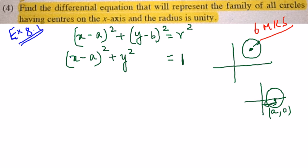When we differentiate this, I get 2 into x minus a plus 2y dy by dx equal to differentiating 1, you get 0. So I can also remove 2 here.